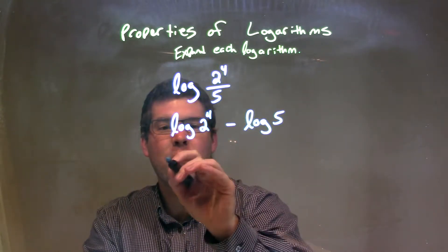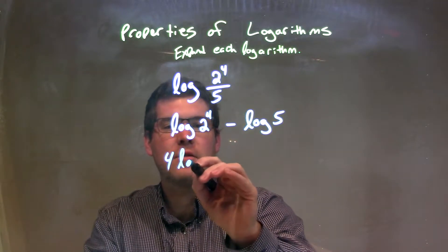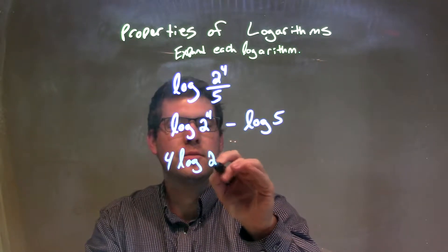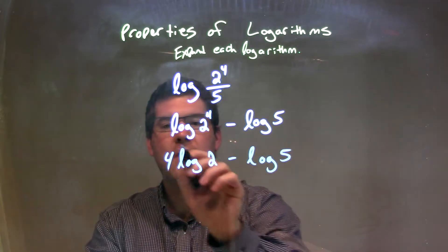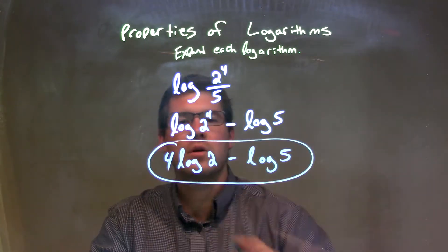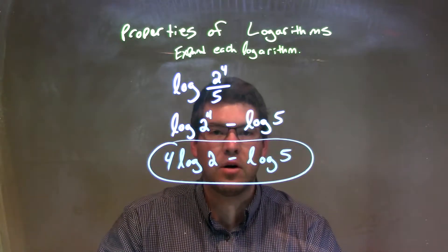When we expand, that 4 comes out up front, then we have the log of the base, which is 2, minus log of 5. And here we have our final answer, which is 4 log 2 minus log 5.